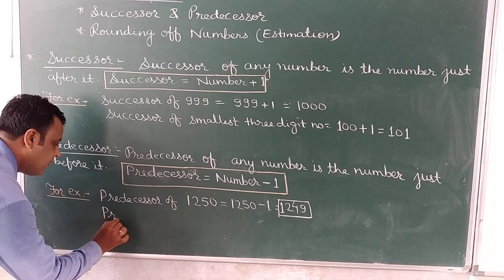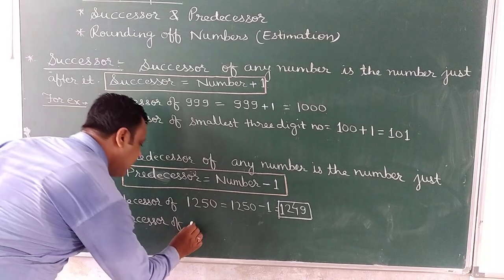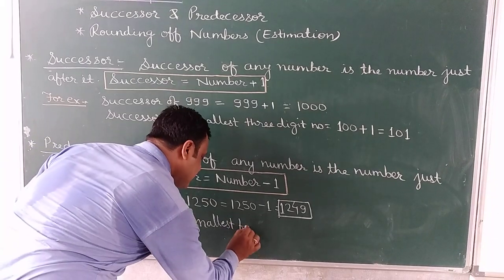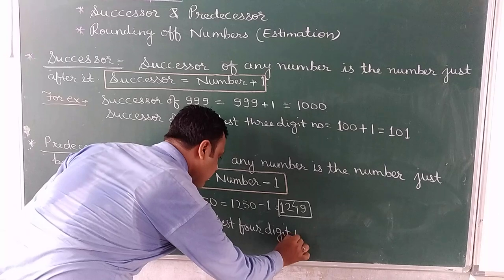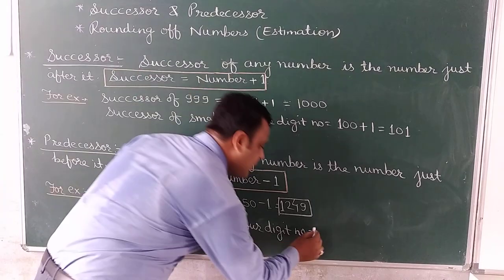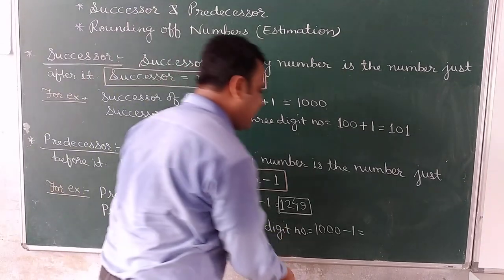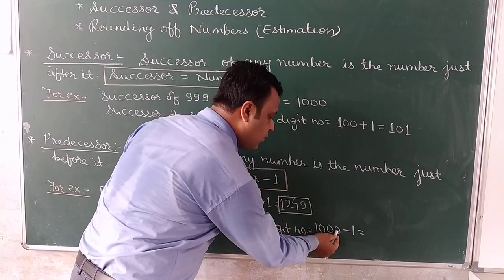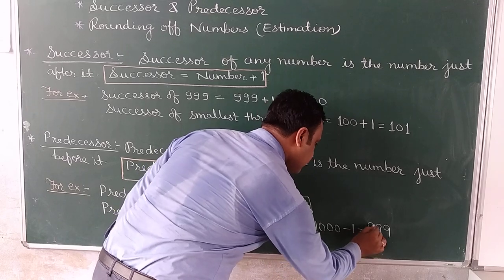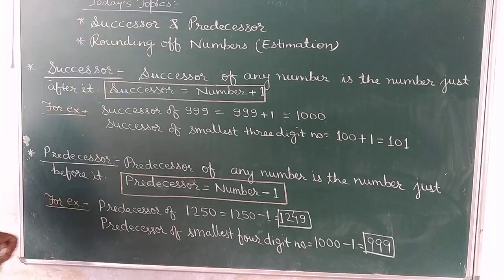Another example: predication of the smallest 4-digit number. We have to write the smallest 4-digit number, that is 1000, and subtract 1 to find its predication. Now 0 minus 1 is not possible, so we borrow. It becomes 10 minus 1 equals 9, and the other digits become 9 also. So 999 is the predication of the smallest 4-digit number.